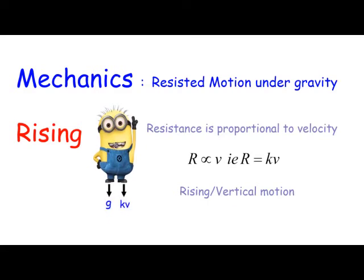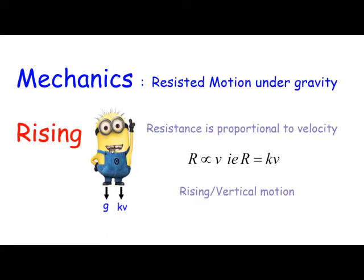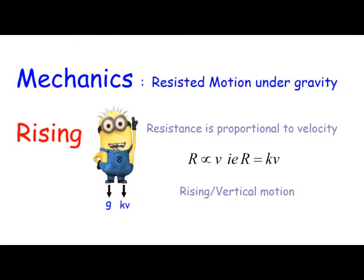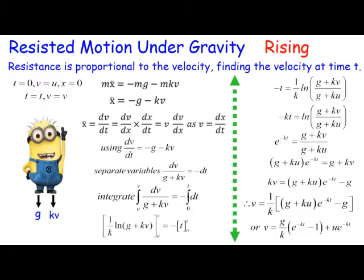Now we're going to set up the equations. You can see that resisting his motion in the upward direction would be gravity which is acting down and the resistance which is kv acting down as well. These are obviously acting in the opposite direction to which the net forces acting, so they actually turn out to be negative.